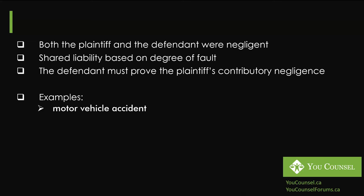A common example is a motor vehicle accident. The plaintiff claims the defendant ran a red light and caused an accident resulting in injury. But in this scenario, the plaintiff was not wearing a seat belt. The defendant takes the position that the injuries were either entirely caused by, or at least partly contributed to by, the plaintiff not wearing a seat belt. The defendant must show the court that the plaintiff failed to wear a seat belt, was therefore negligent, and that this caused or contributed to the extent of the plaintiff's injuries.